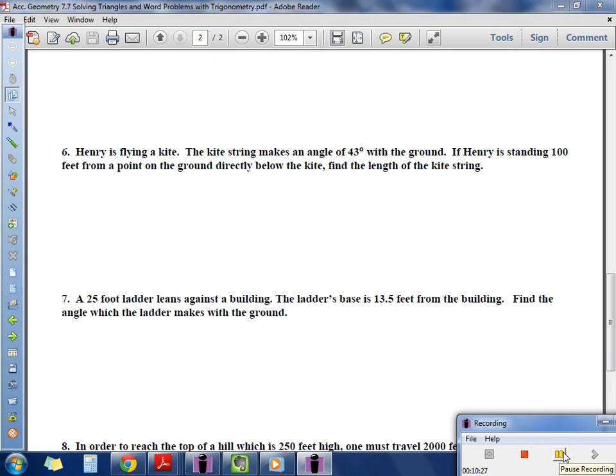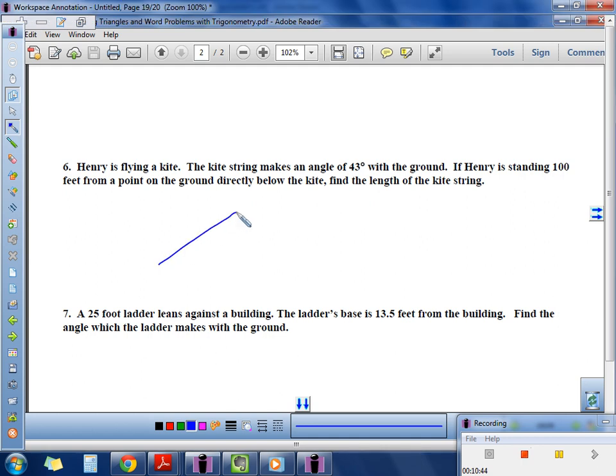Here we go. Number six is a little bit different. It says, Henry's flying a kite. The kite string makes an angle of 43 degrees with the ground. If Henry is standing 100 feet from a point on the ground directly below the kite, find the length of the kite string. So let's read through that again. Henry's flying a kite, so you've got to get this in vision. It's going to look like this. Say Henry's right here. He's flying a kite. Goes up to here. Makes a 43 degree angle with the ground. If Henry is standing 100 feet, he's standing right here. It's 100 feet from a point on the ground. Well, here's the point on the ground. He's standing 100 feet from that point. It is directly below the kite. You can see that. It's directly below the kite. Find the length of the kite string. We'll call the kite string an L or something. An S string.